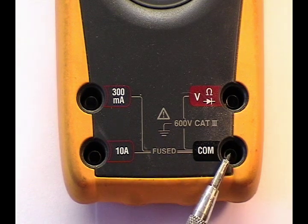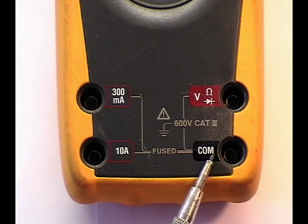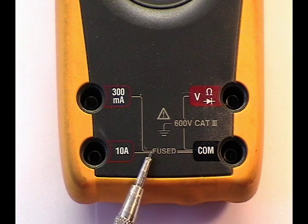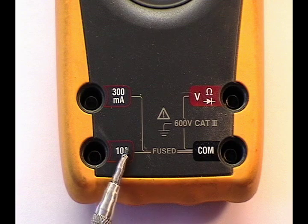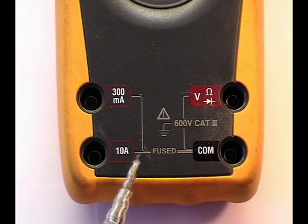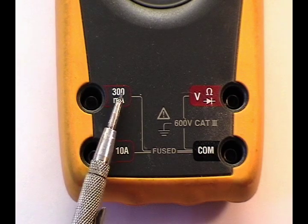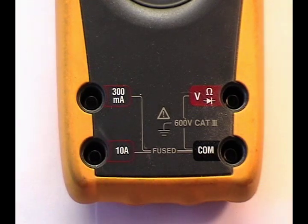The common or ground terminal is fused internally to two amperage measurement jacks: a 10 amp jack and a 300 milliamp jack. If these limits are exceeded, the internal fuse will blow and can be replaced.